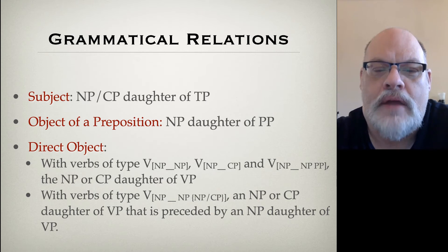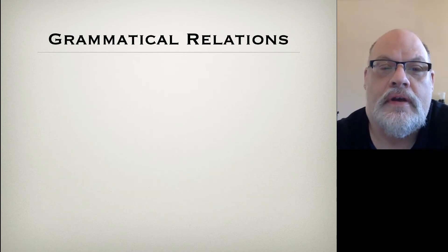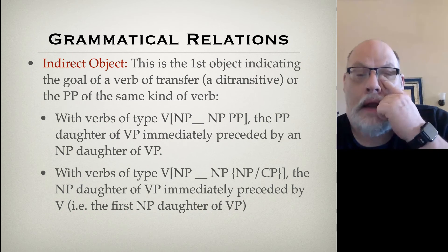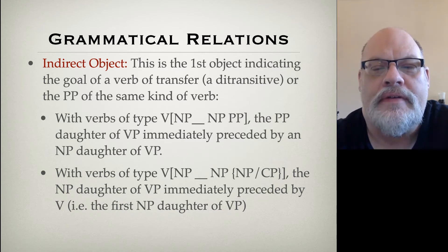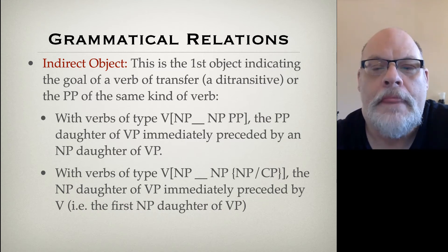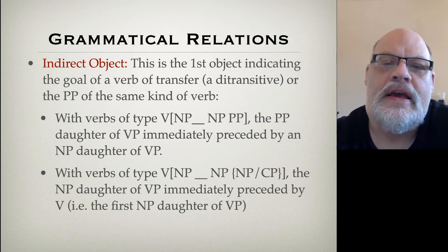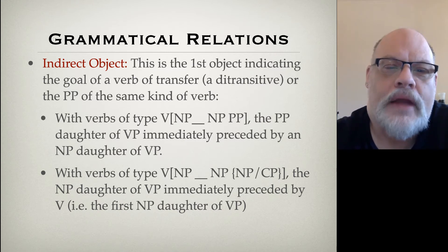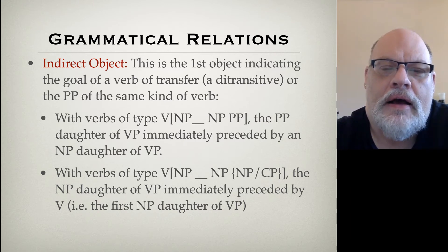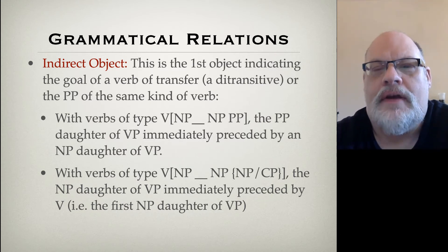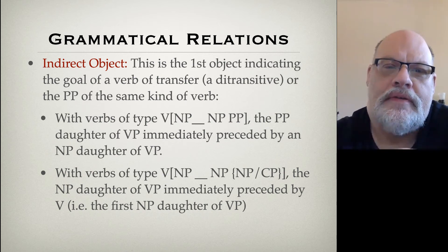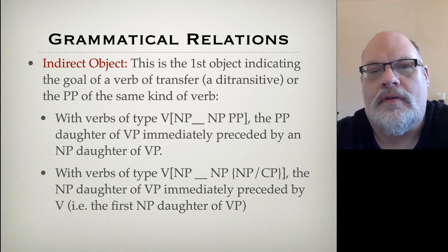This is not a great definition. Indirect objects — it's sort of the flip side of the direct object. So if you have a verb phrase that has a noun phrase and a prepositional phrase, the prepositional phrase is the indirect object. And if you have two noun phrases, it's the first noun phrase after the verb. This is not a particularly insightful definition, but it will help you correctly identify which item is the direct object and which object is the indirect object.